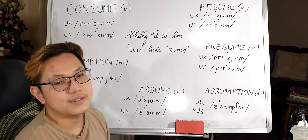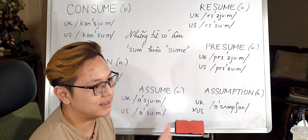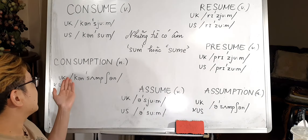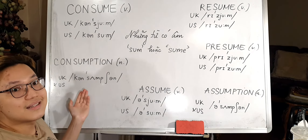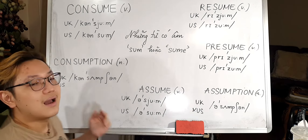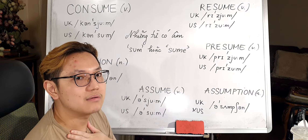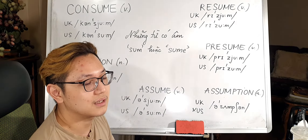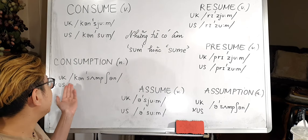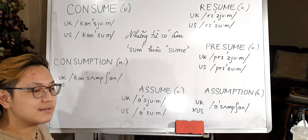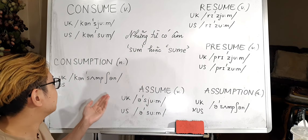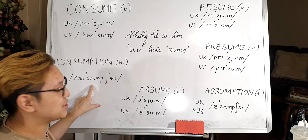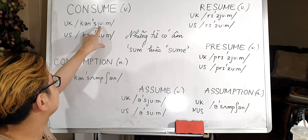That's all about the verbs. Now let's look at the noun form and how the sounds differ. Cái âm thanh nó sẽ khác biệt khi mà nó chuyển thành dạng danh từ. Let's look at the noun form of 'consume', which is 'consumption'. For UK and US it's the same. So instead of 'consume', it becomes 'consumption' — see the change in the sound.